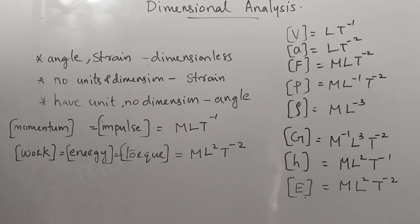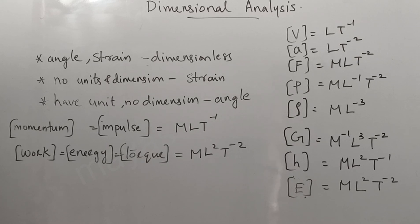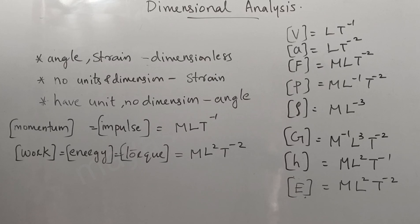Key quantities and their dimensions: Volume, Area, Force, Pressure, Density, and the gravitational constant G. The gravitational constant G has dimension M⁻¹ L³ T⁻², which is a specific constant of physical quantity.